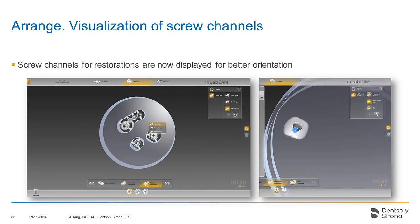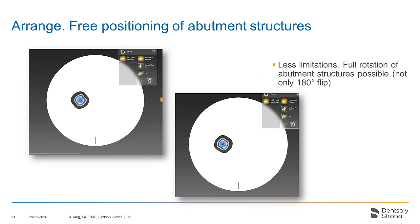Now stepping over to the arrange phase. There are some minor changes: the screw holes will now be displayed in the restoration for better orientation — for some abutments this was not the case in the past, so this gives a little better orientation when you want to position implant-based restorations in a puck. Also, there are fewer limitations in terms of positioning or rotation of abutments: today it's only possible to flip them by 180 degrees, but in the future there is more freedom to rotate these restorations.